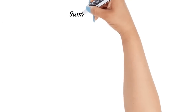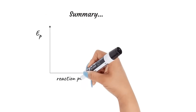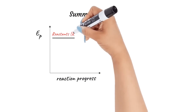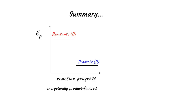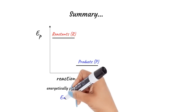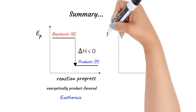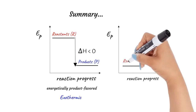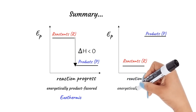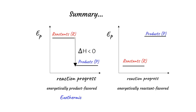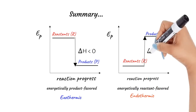In summary, during a chemical reaction, if the products are more energetically stable than the reactants, the reaction is energetically product favored. These are exothermic reactions with a negative delta H value. On the other hand, if the reactants are more energetically stable than the products, the reaction is energetically reactant favored. These are endothermic reactions with a positive delta H value.